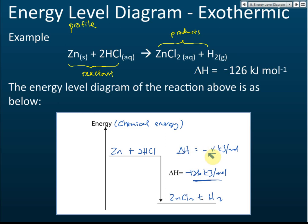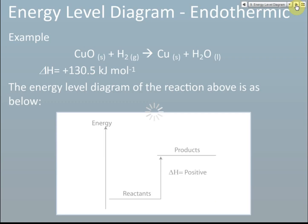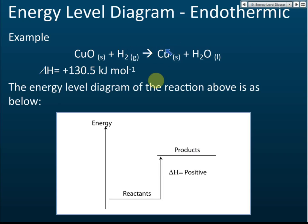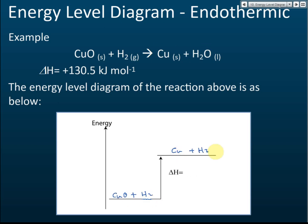For endothermic reactions, the energy increases and delta H is positive. The energy of the products is higher than the energy of the reactants, and the heat of reaction is positive.